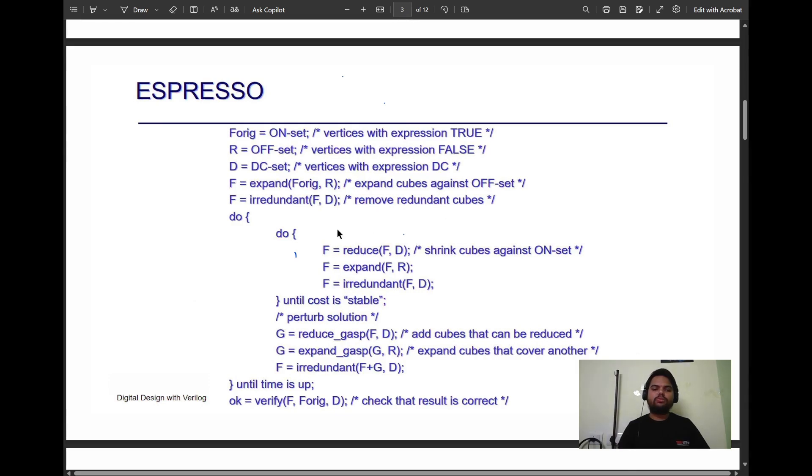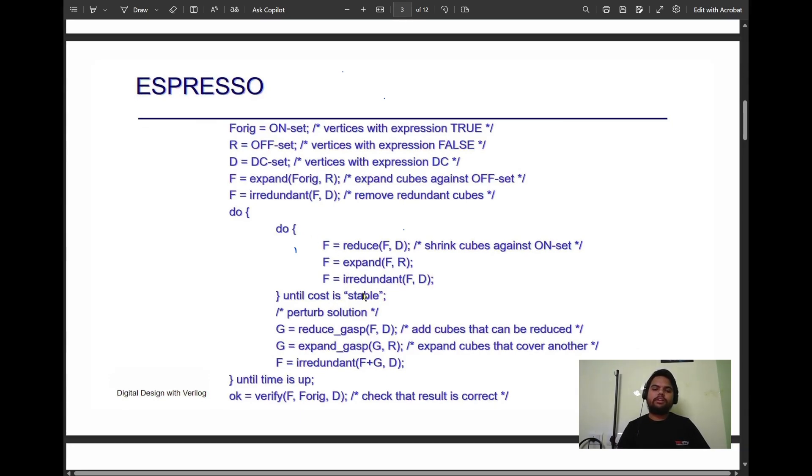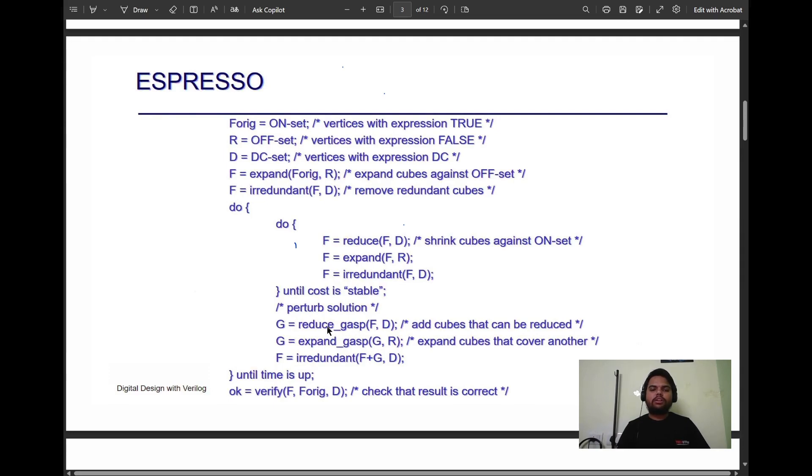Then we introduce inner do loop. In the inner do loop, we introduce reduce function in which we pass the resultant Boolean expression and the don't care set to shrink against onset value. Then we do expand operation and irredundant operation against the resultant Boolean expression until the cost is stable. Cost stable means if we're getting the same minterm values again and again, we have to come back into the outer do loop to search for new solutions, meaning we search for other local minimum or global minimum values.